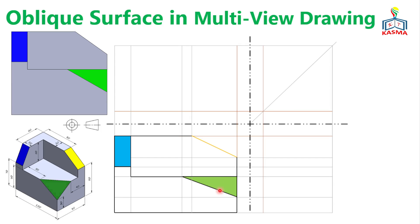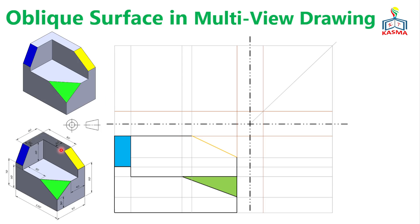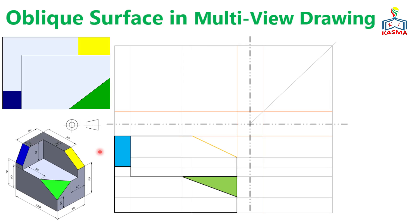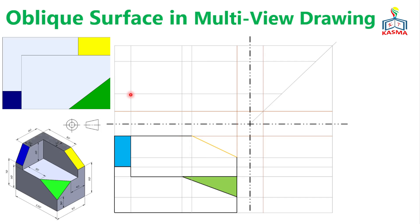For the top view, first project the L-shape — the inverted edge shape — as it is simpler. From the reference, measure 60mm for a horizontal line, then 20mm for another line. Connect all edge points to get this shape. For the blue inclined surface, the remaining parts form a rectangle, giving this layout on the top view.